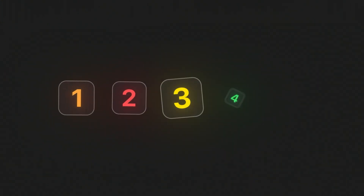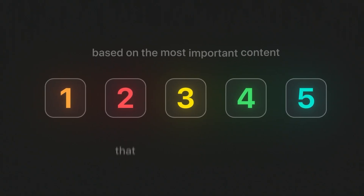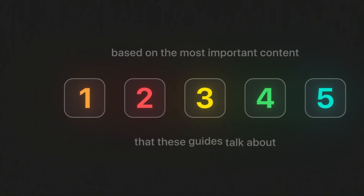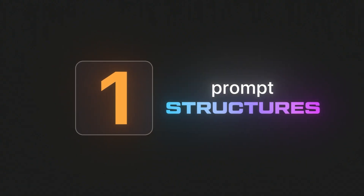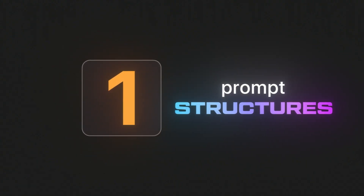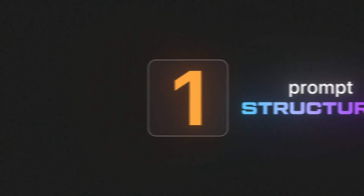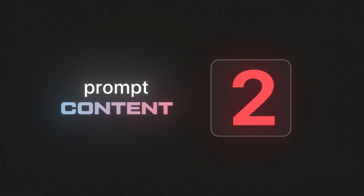I've divided this video into five sections based on the most important content that these guides talk about. First, we have prompt structures — the key elements that every AI prompt should include no matter the use case. After this, we have prompt content, which is the way that we speak and frame our requests to these AI models.